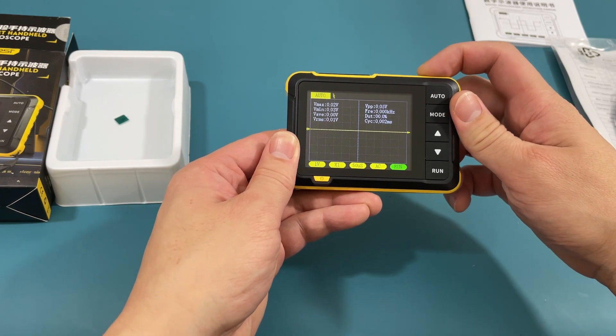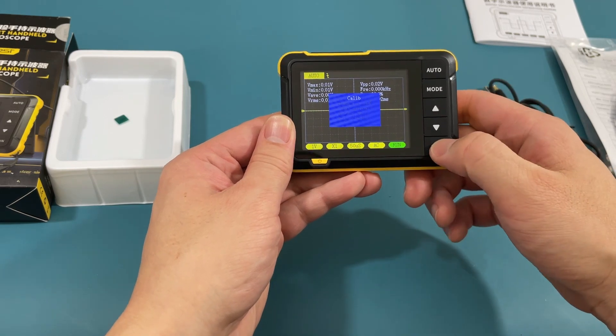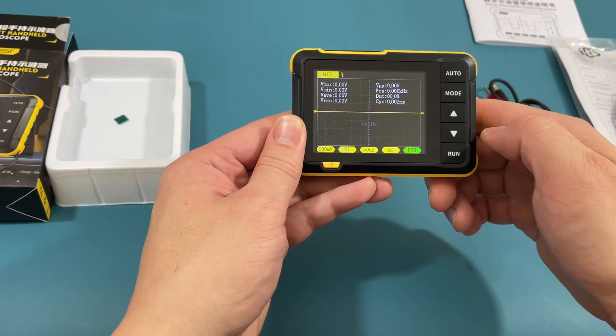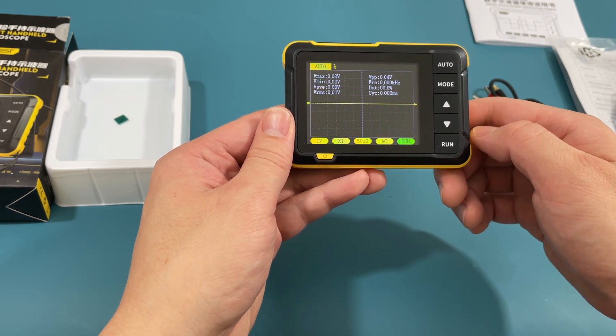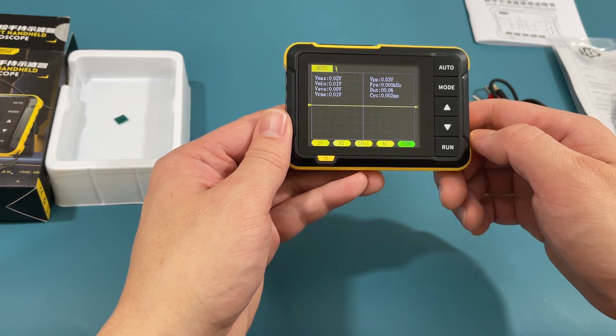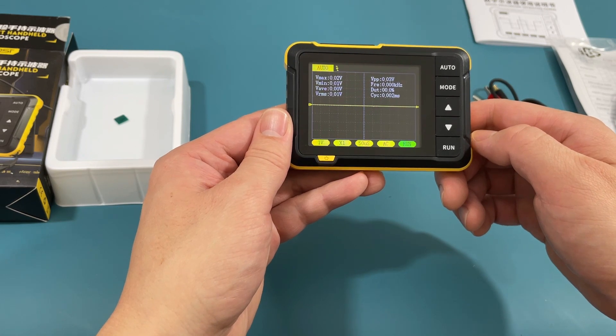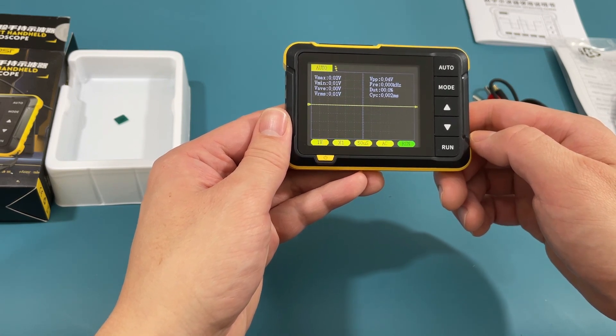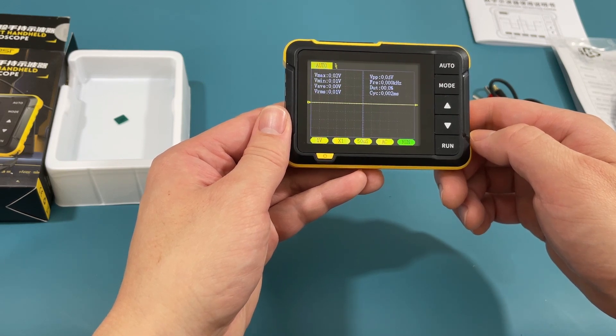To calibrate, press and hold the track wheel button. When the blue box appears on the screen, press the run button. It takes a few seconds to calibrate the oscilloscope. You can hear some clicking noises. Very relaxing.